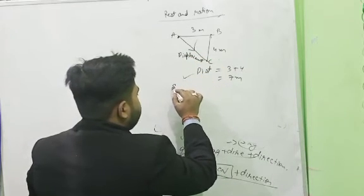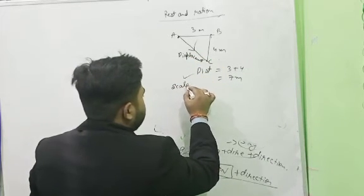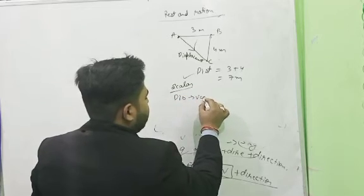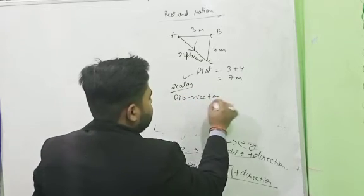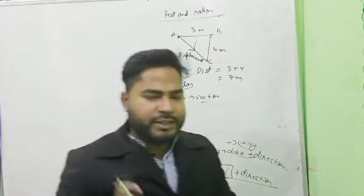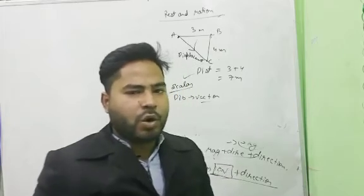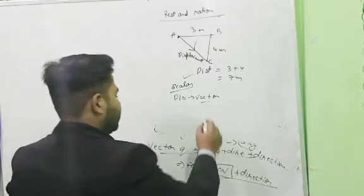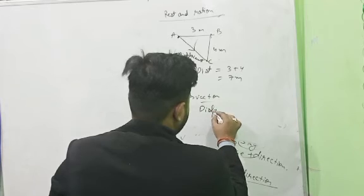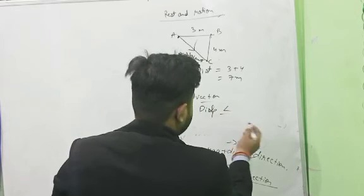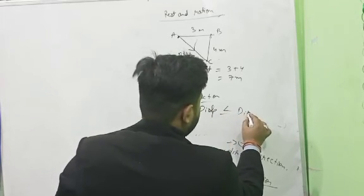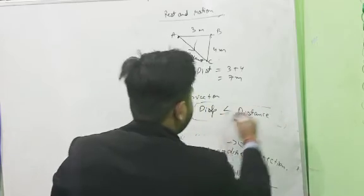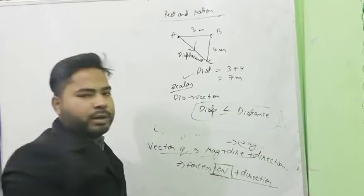Distance is a scalar quantity and displacement is a vector quantity. Displacement is always less than or equal to distance — displacement can never be greater than distance.